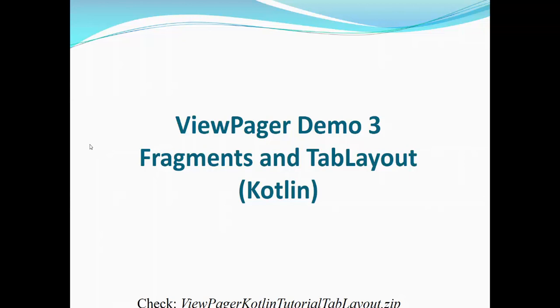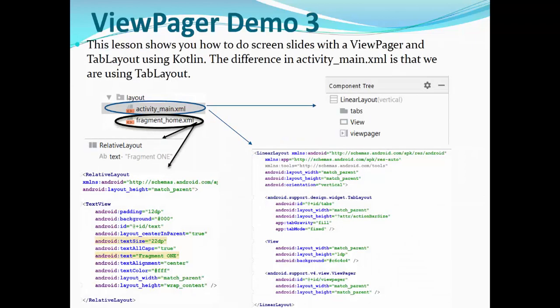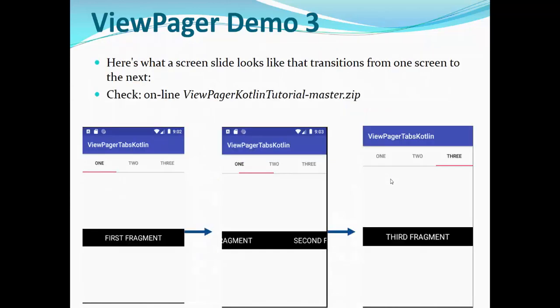And finally, ViewPager demo three: fragments and TabLayout using Kotlin. Please check the last view pager tutorial. This lesson shows you how to do screen slides with view pager and TabLayout using Kotlin. The difference is in the activity that we use TabLayout. Nothing new for the fragment home XML, just using text view. But we have here TabLayout, TabLayout goes first. Then we see view pager goes last, match parent for the rest of the XML layout. Here is what screen slides looks like, the transition from one screen to another. Please check online view pager Kotlin tutorial master zip.